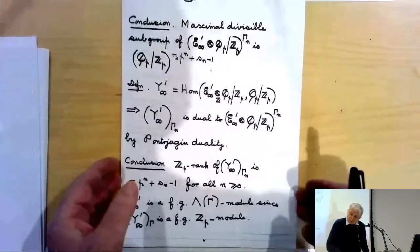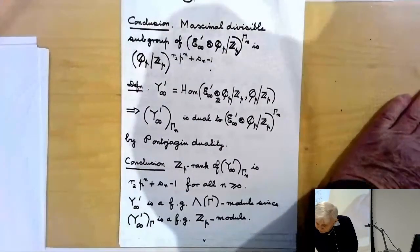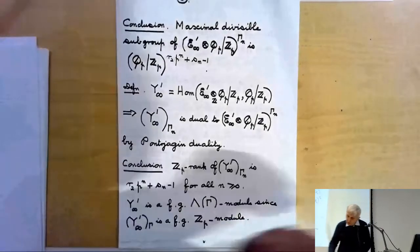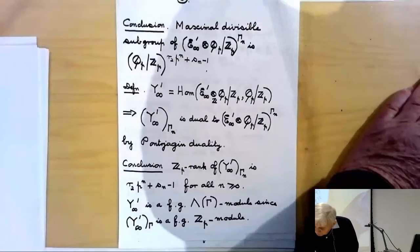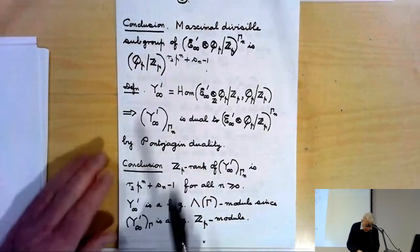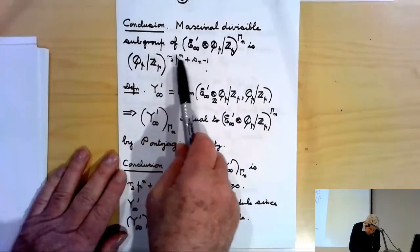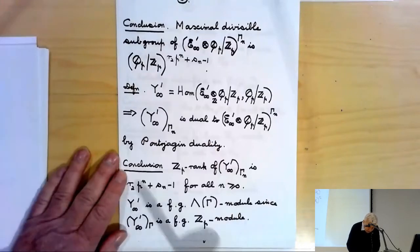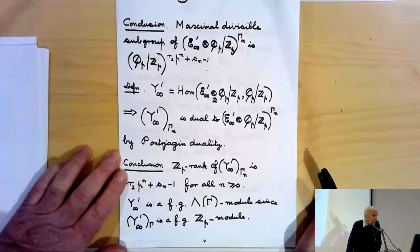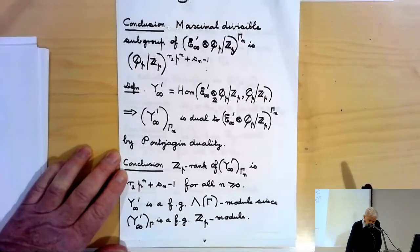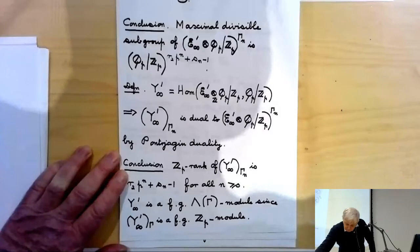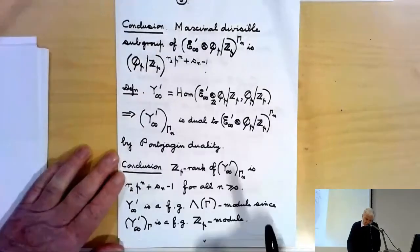Therefore, because the H^1 term is a finite group, we conclude that the maximal divisible subgroup of the middle term (E∞' ⊗ (Q_p/Z_p))^{Γ_n} is (Q_p/Z_p)^{r_2·p^n + s_n - 1}. There is nothing divisible in the H^1 term, so this is clear.